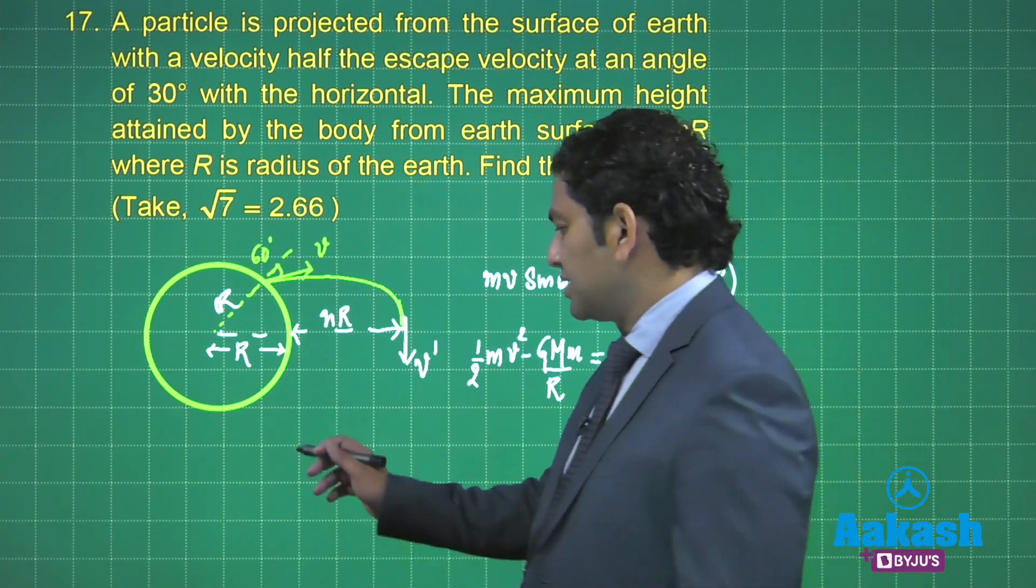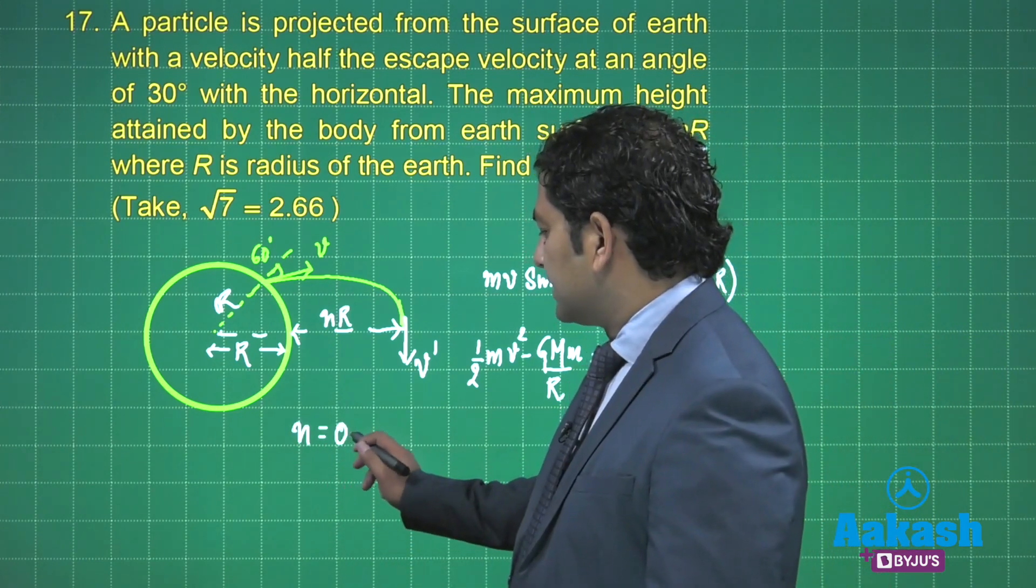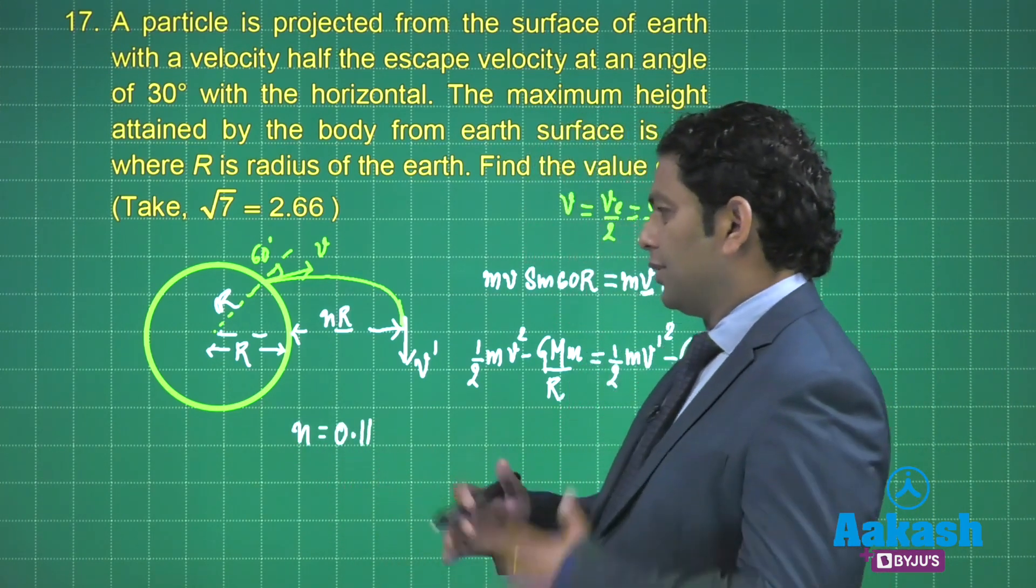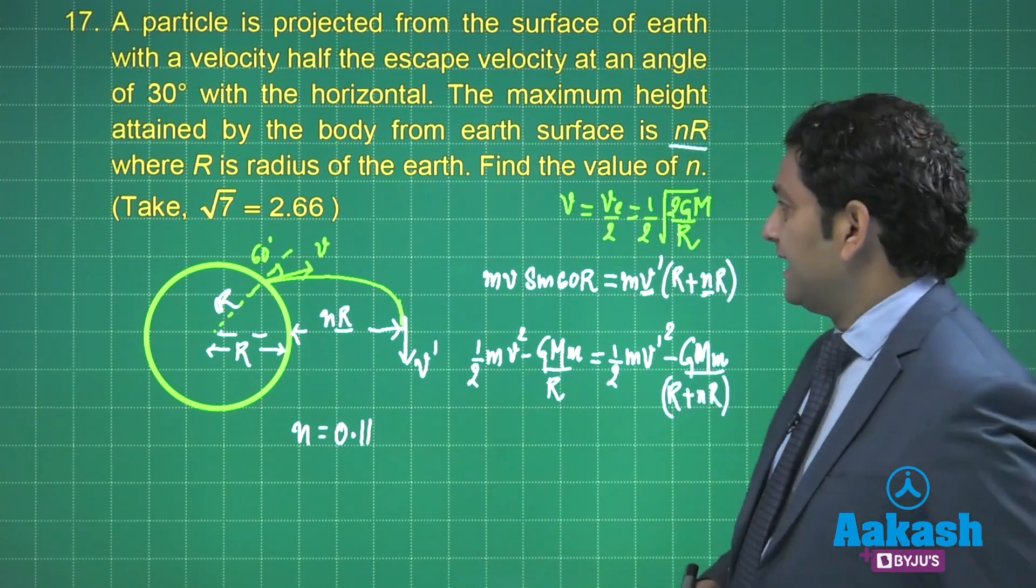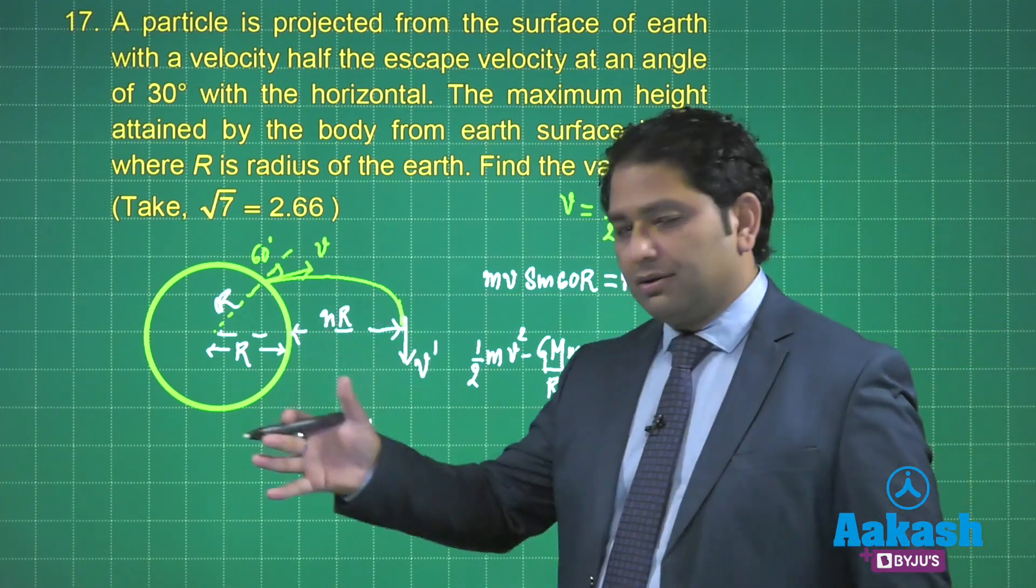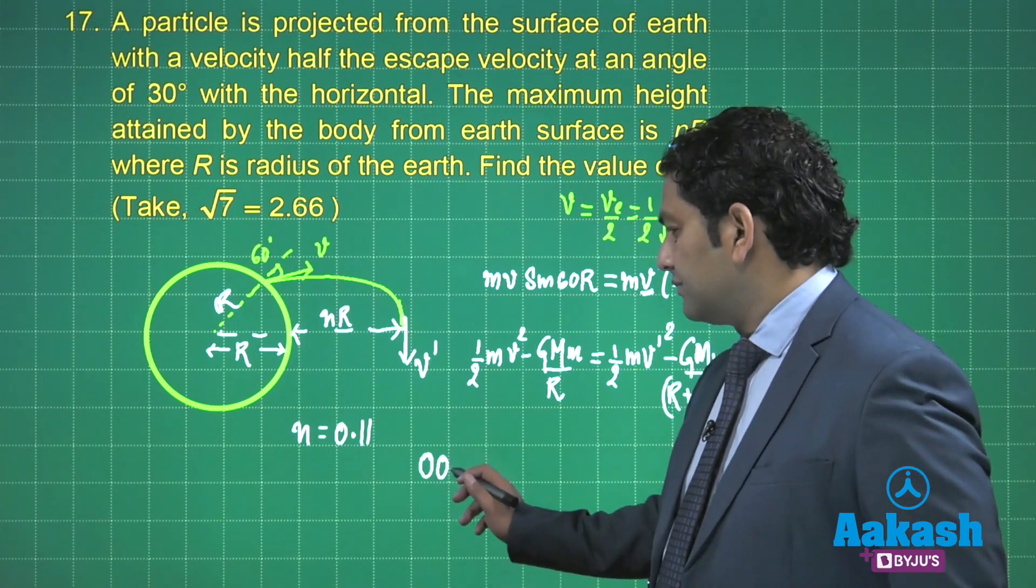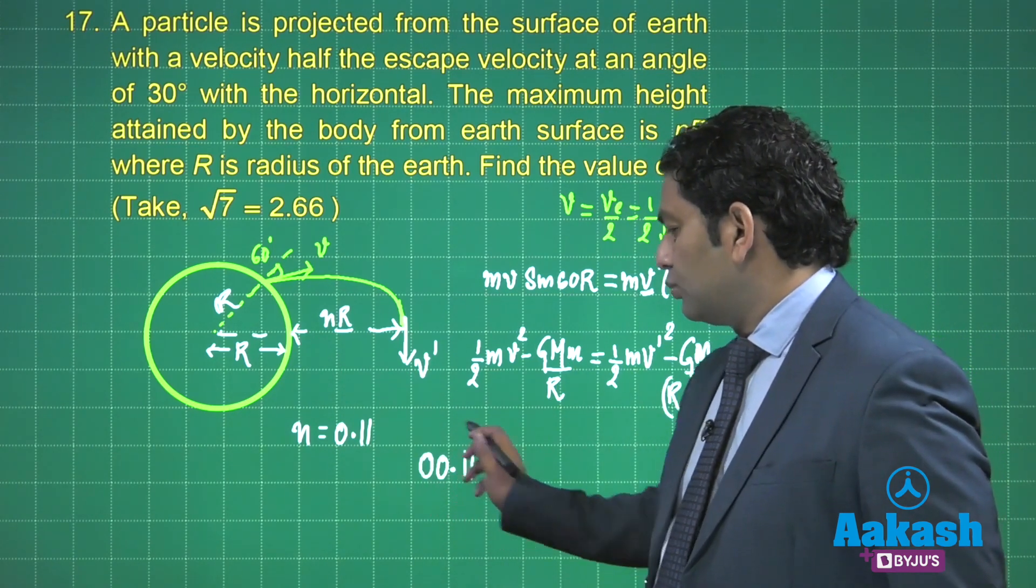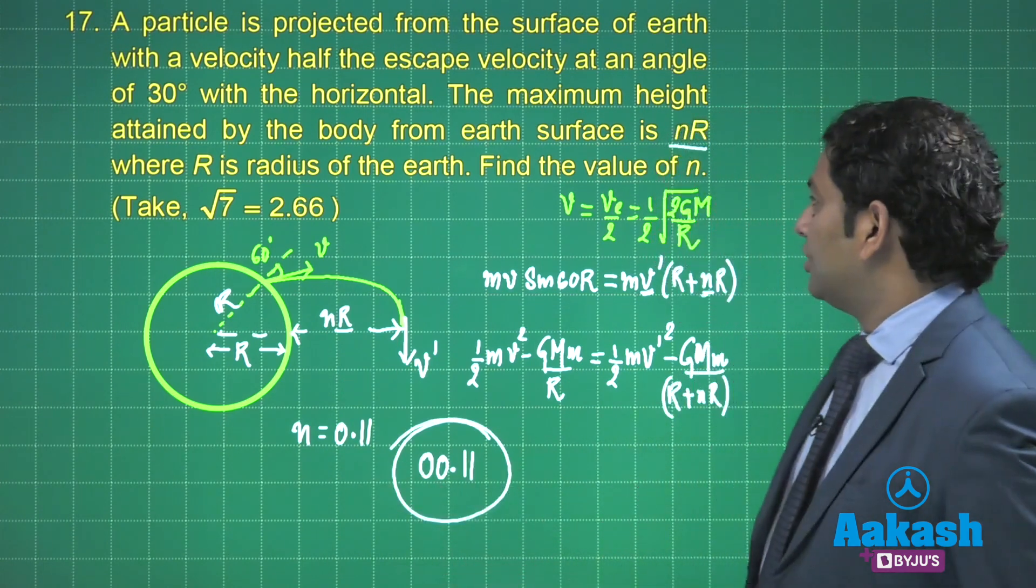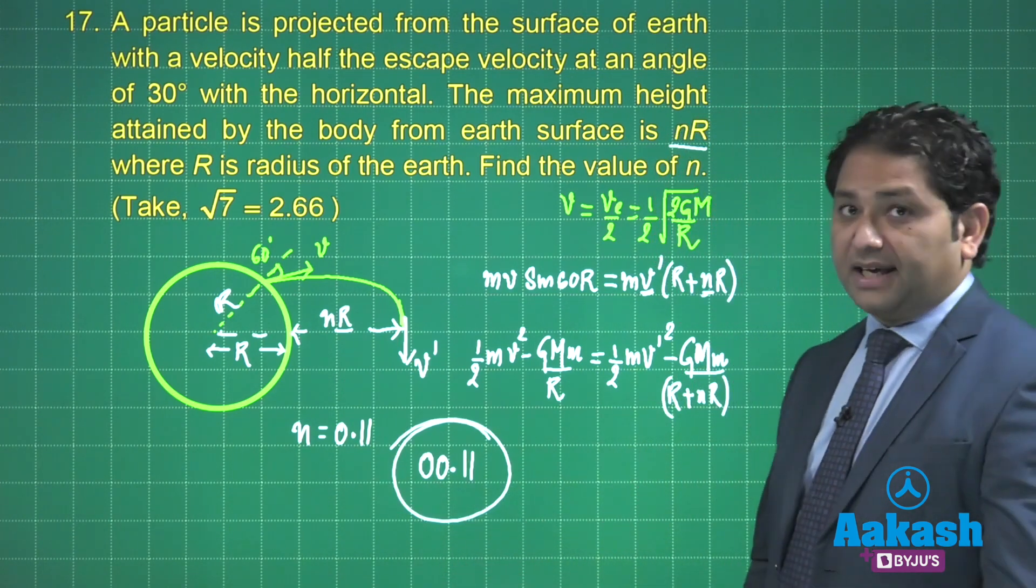When you solve, the value of n that comes out to be 0.11. I know a little bit of rough calculation is there, and when you have to report the answer as per the given format, so that correct answer would be double zero point double one. That's the correct value of n. And the final question.